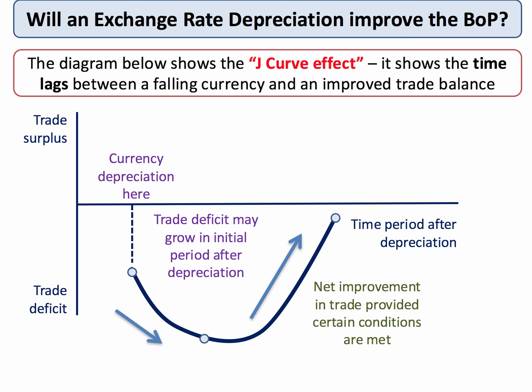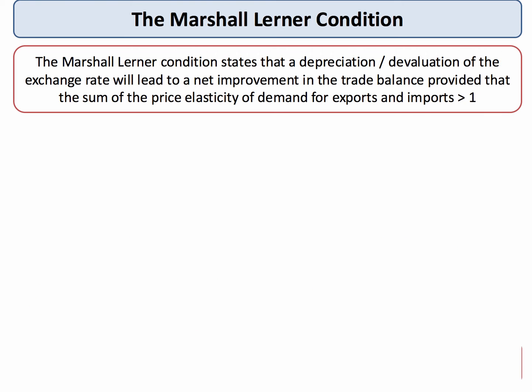Now, for that to happen, certain conditions are needed. We call those conditions the Marshall-Lerner condition. The Marshall-Lerner condition states that a depreciation or devaluation of the exchange rate will lead to a net improvement in the trade balance, provided that the sum of the elasticity of demand for exports added to the elasticity of demand for imports is greater than one. You don't have to prove this in the A-level exam, but it's worth knowing: provided that the sum of the two elasticities of demand for exports and imports is greater than one, a fall in the exchange rate ought to lead to an improved trade position.